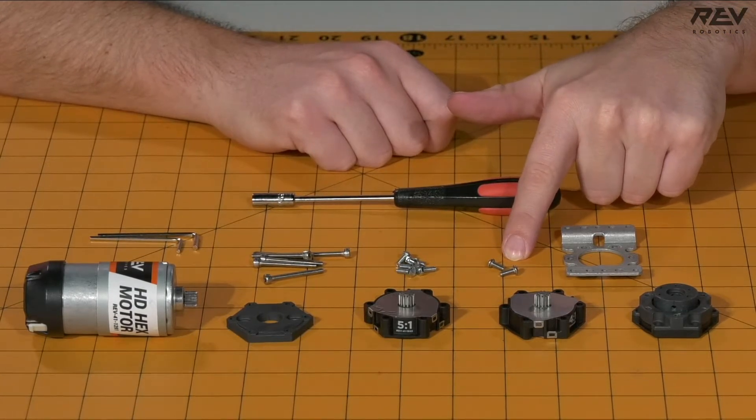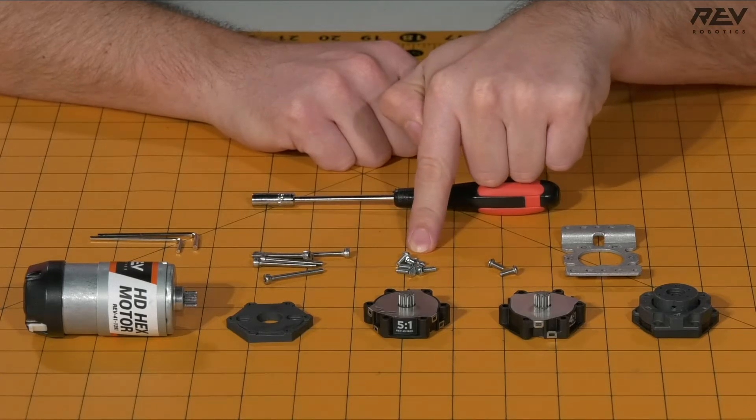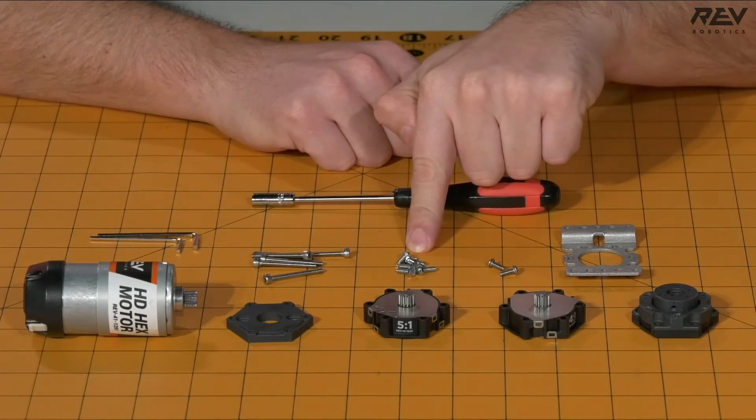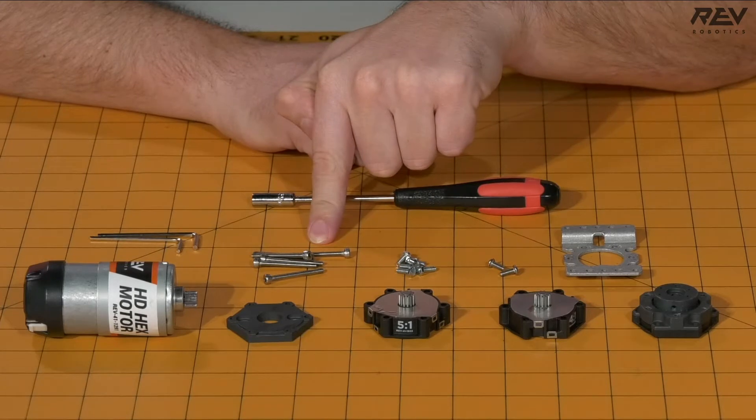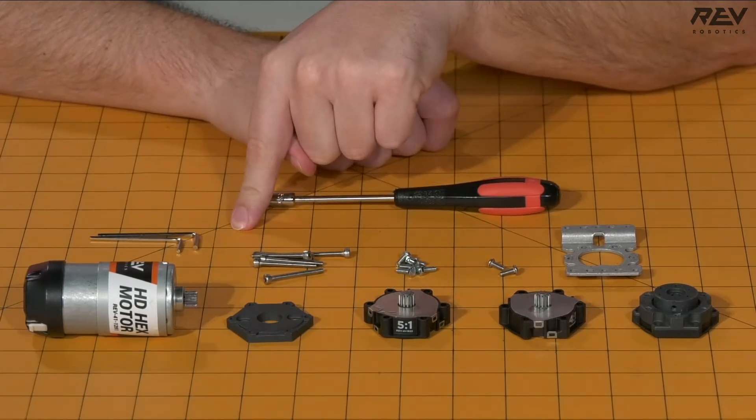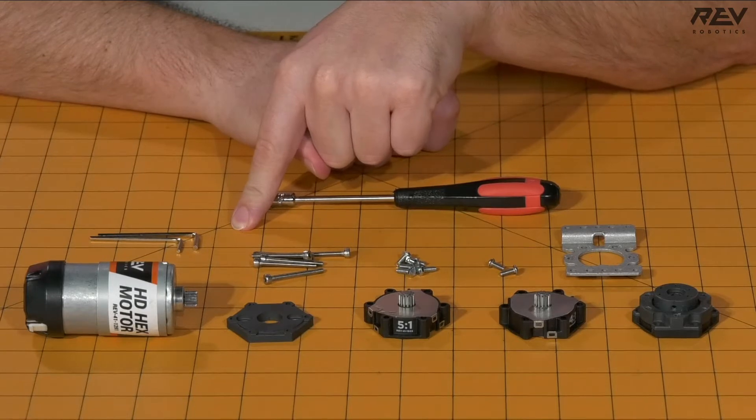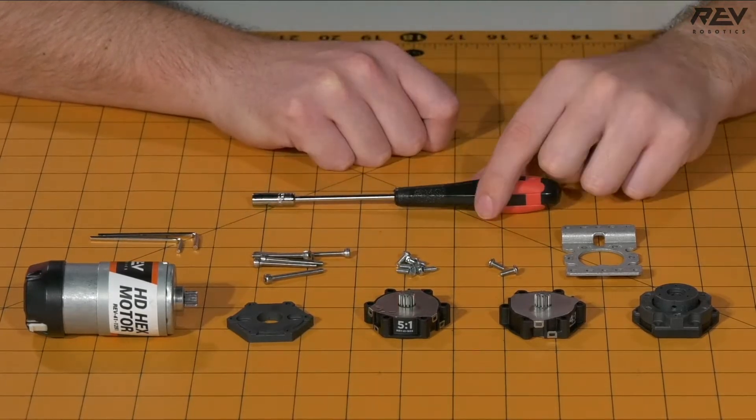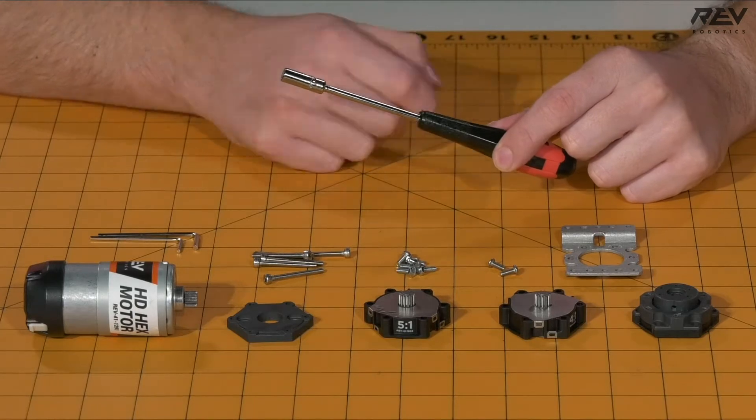2 M3 8mm button head screws, 6 M3 8mm hex cap screws, 6 M3 30mm cap head screws, as well as a 2mm Allen wrench, a 2.5mm Allen wrench, and a 5.5mm nut driver.